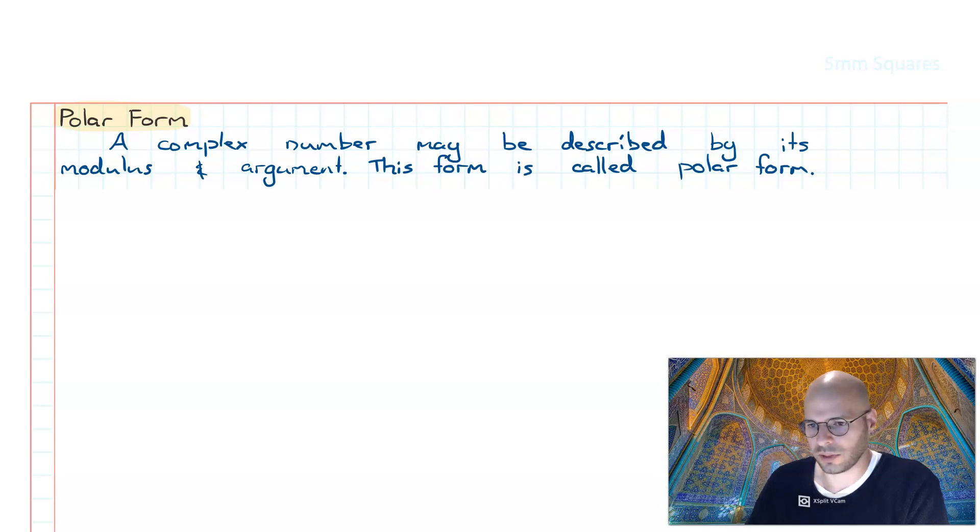Welcome to this video on the topic of complex numbers. In this lesson we're going to have a look at something called polar form. A complex number may be described by its modulus and argument. This form is called polar form.